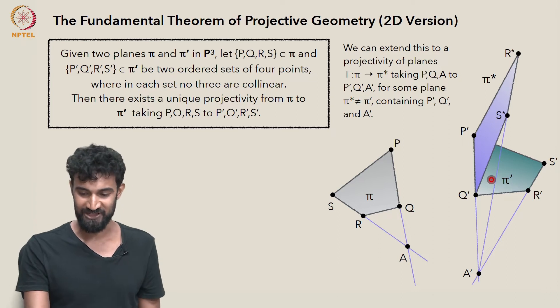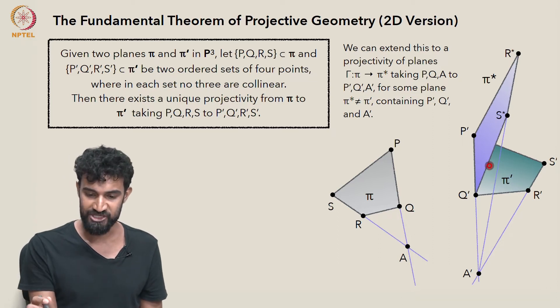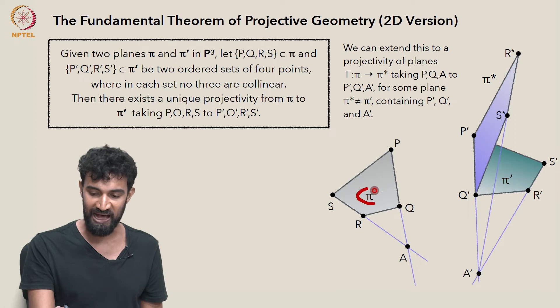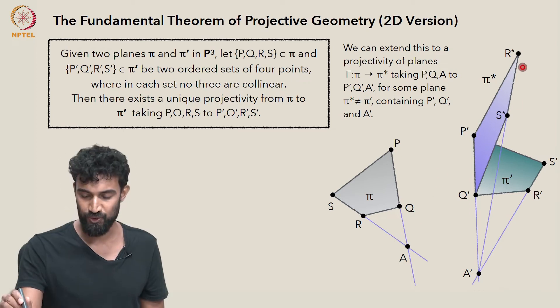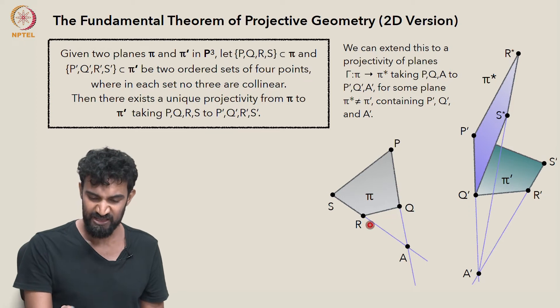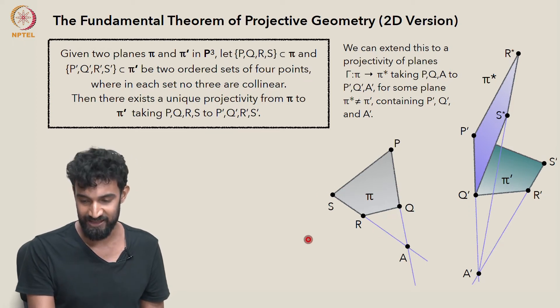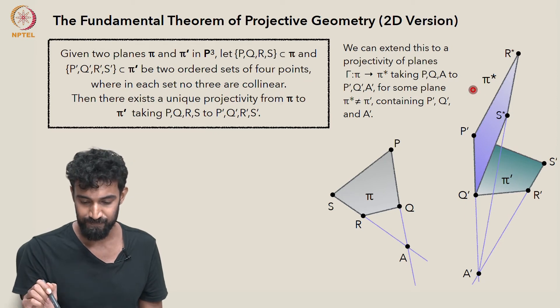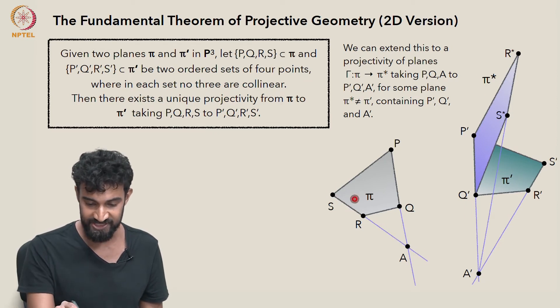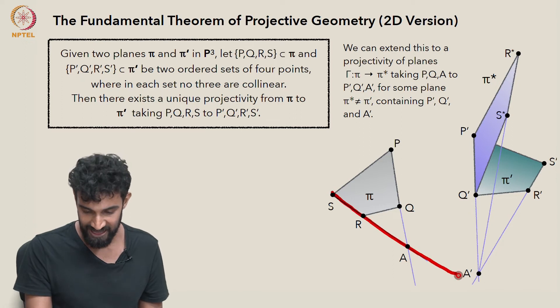So we have a projectivity gamma now, which maps π to π star and takes these three points to these three points. Notice that under this projectivity gamma, it's going to take S and R somewhere in this plane π star. But it's going to take this line S, R, A to some line going through A prime.